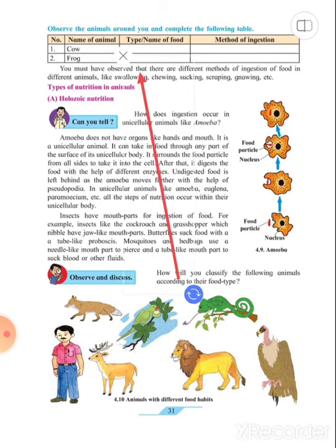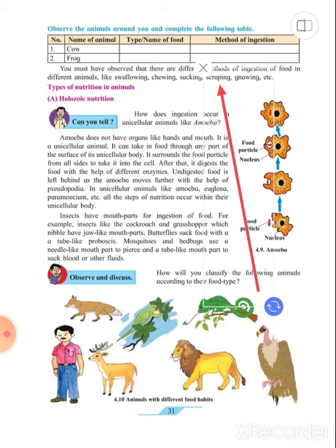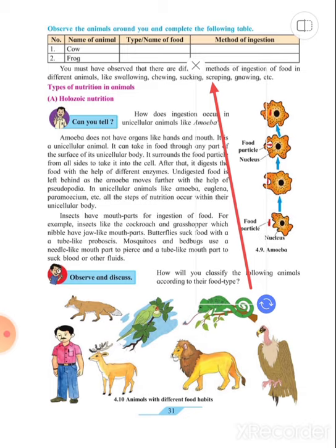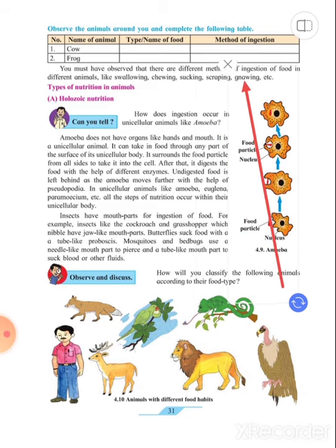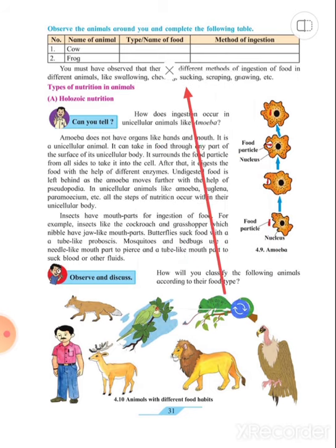Different animals have different methods of eating. Like swallowing means gulping, chewing means chewing, sucking means sucking, scrapping - which we observe in snails - means eating by scraping. Gnawing is eating by nibbling. So these are some methods of ingestion.